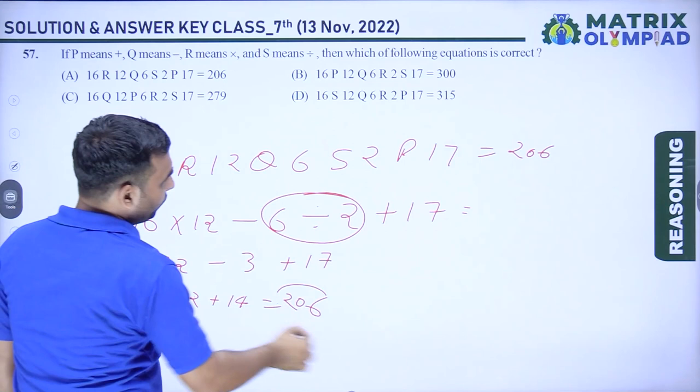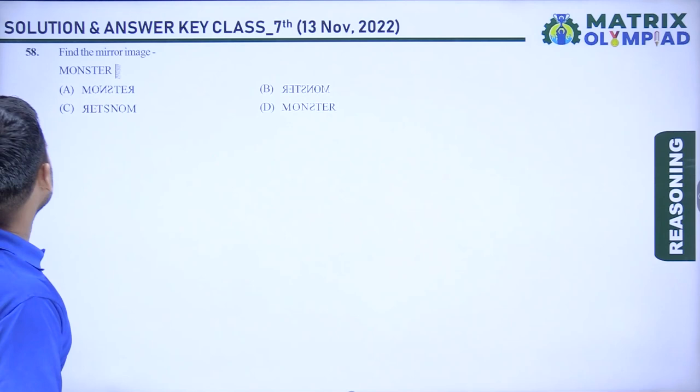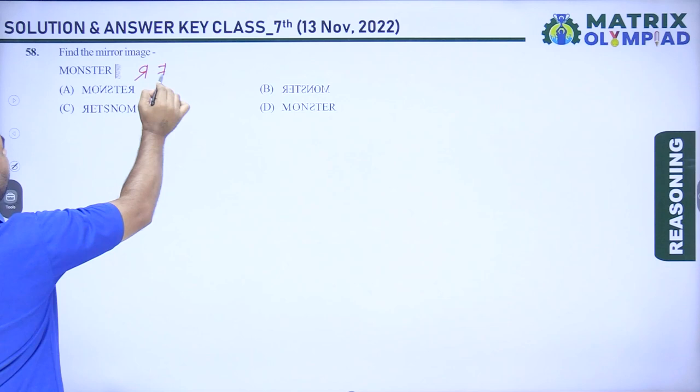Question 58: find the mirror image of R, E, T. The correct mirror image option is option B.